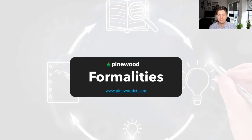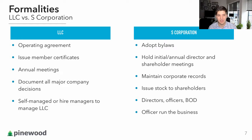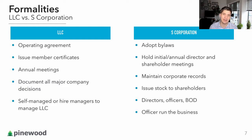As far as the formalities required to maintain and start these companies, the LLC requires an operating agreement — that's literally a five, ten, or twenty page document that you and your partners sit down and write out, typically with a template, to outline what is this business all about, what happens in various scenarios, when does the business dissolve, are we going to sell this business and if so, what happens to all the money. You'll also issue member certificates — not shares, but membership certificates. You do need to have an annual meeting and document all major business decisions in the minutes. You can either self-manage an LLC or hire managers to manage it.